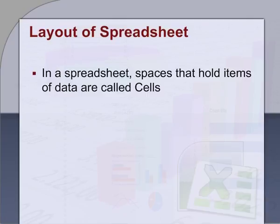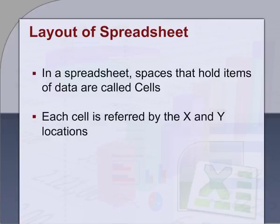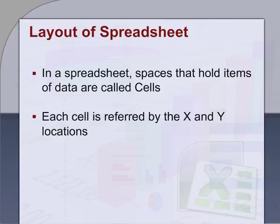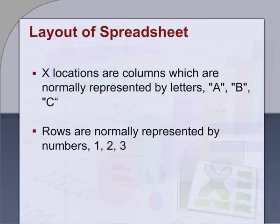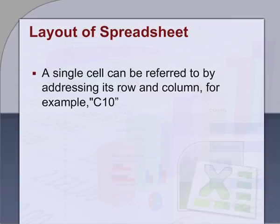Layout of spreadsheet: in a spreadsheet, spaces that hold items of data are called cells. Each cell is referred to by its x and y locations. X locations are columns, which are normally represented by letters A, B, C, etc., while rows are normally represented by numbers 1, 2, 3, etc. A single cell can be referred to by addressing its row and column — for example, C10.